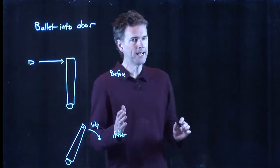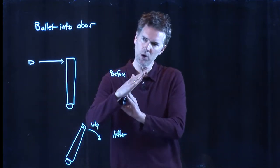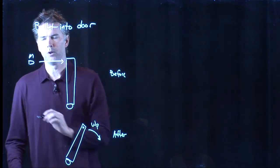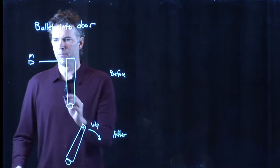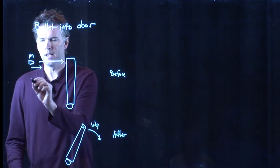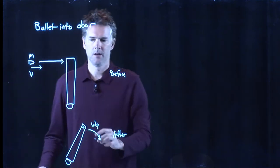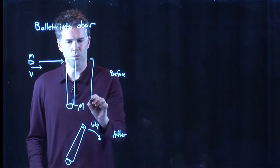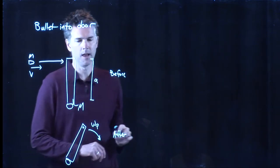Remember omega is angular speed. How fast is that door rotating in radians per second? And we'll give you some parameters here. This bullet has mass m, it's coming in at v. The mass of the door is capital M. The width of the door we will call a.